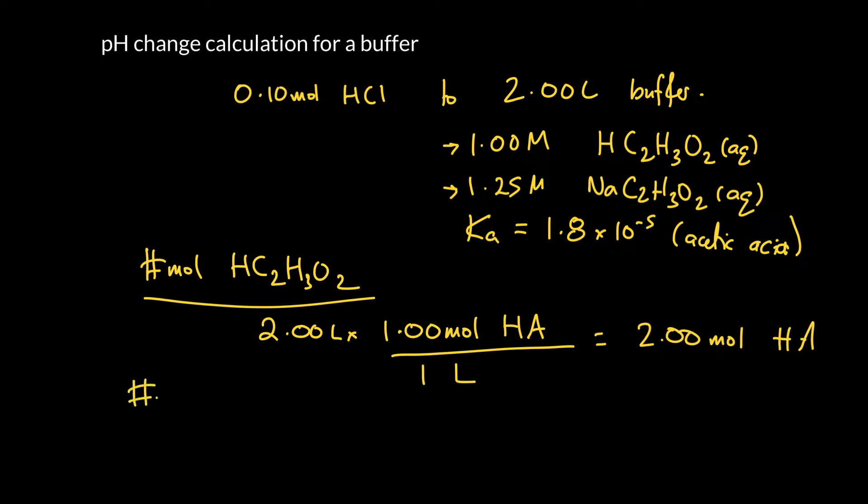Let's look at the number of moles of its conjugate base, the number of moles of acetate. Remember, the sodium has absolutely no effect at all. So we've got 2 liters of solution, and it is 1.25 molar. So there's 1.25 moles of acetate per liter. We can see 2 times 1.25 is 2.5 moles of our acetate ion. Okay, so let me go to another page and let's go ahead and run the calculation through.